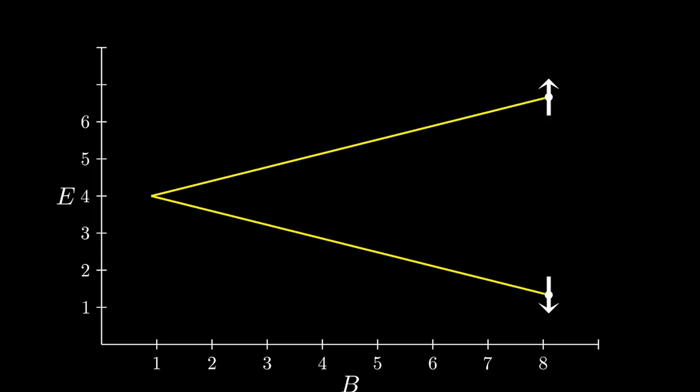Specifically, what we're doing is splitting the electron's spin states. Usually, there are two spin states for electrons, spin up and spin down. Spin up and spin down are usually degenerate, which means that they have the same energy. There's no preferred direction for the electron to spin.